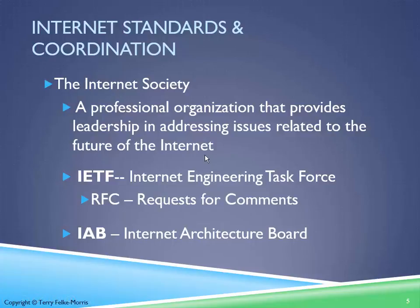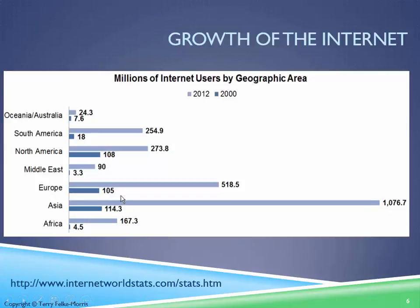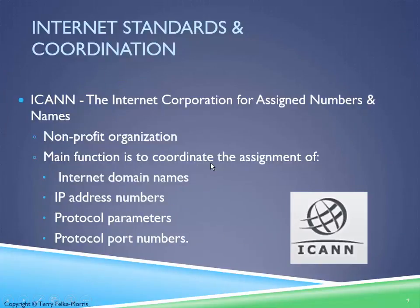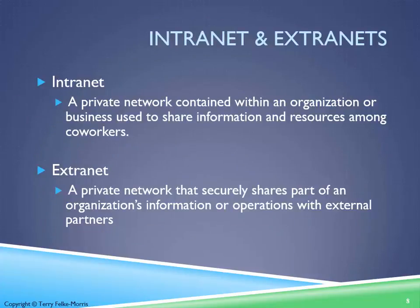No one owns the Internet directly. Rather, there are different organizations that take responsibility for different parts of it. Some of these organizations include the Internet Society, the IETF, and the IAB. There's also an interesting statistic here — millions of users by geographic area — and if you notice how the numbers have jumped, especially in places like Asia and Africa. ICANN is another one of these Internet Standards Organizations.